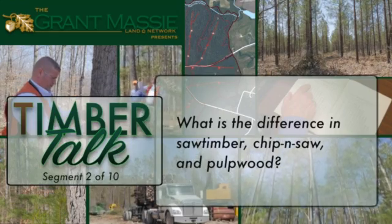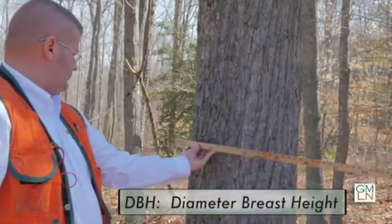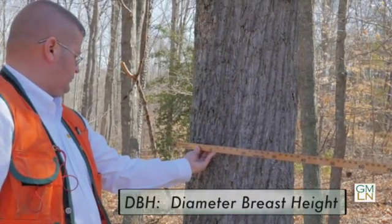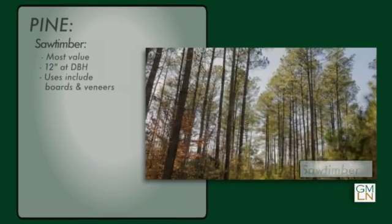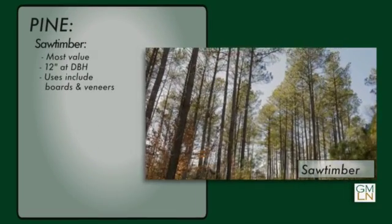Let's talk about the difference between saw timber, chip and saw, and pulpwood. Saw timber is usually the larger trees diameter-wise — it's going to be 12 inches diameter breast height (DBH), which is measured from the ground to four and a half feet up. For saw timber, it's 12 inches and above.